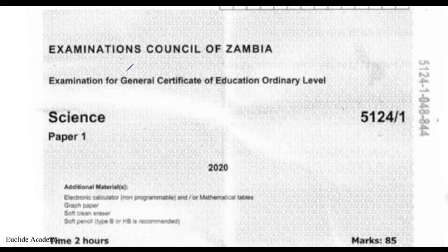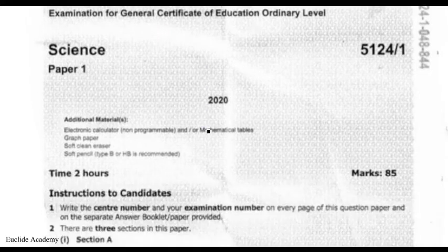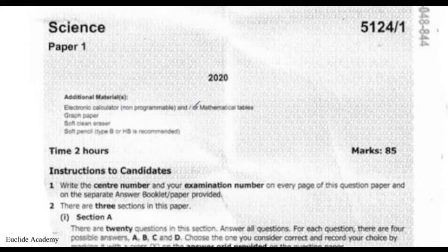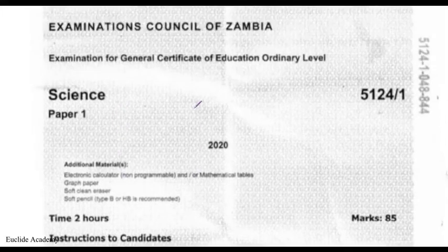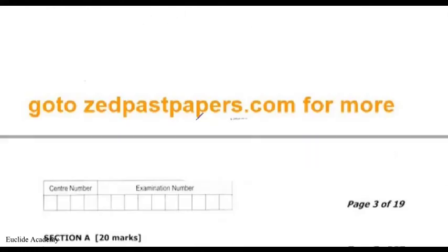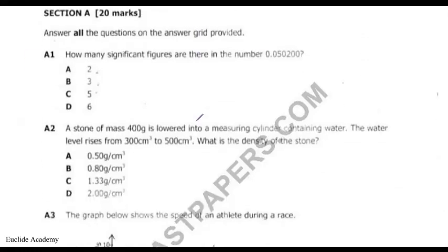All right, let's get on with the revision of a science past paper. We're using the GCE 2020 science past paper. We're going to revise this past paper. Answer all questions on the answer grid — those are the instructions.